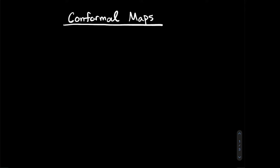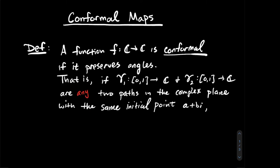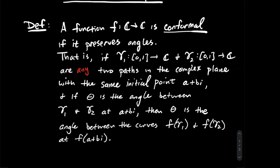This is a video about conformal maps in the context of a complex variables class. A function f from C to C is conformal if it preserves angles. More precisely, if you have two paths gamma 1 and gamma 2 in the complex plane with the same initial point a+bi, and theta is the angle between gamma 1 and gamma 2 at a+bi, then theta is also the angle between the image curves f(gamma 1) and f(gamma 2) at f(a+bi).